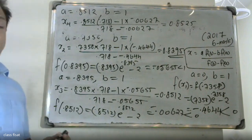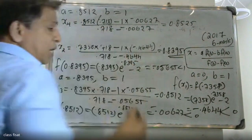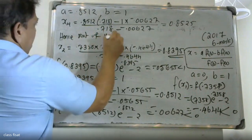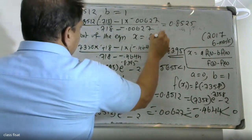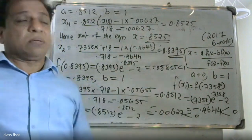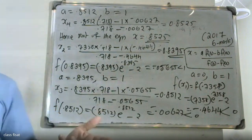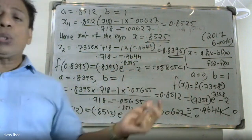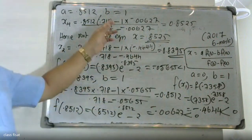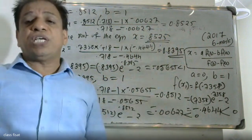We now calculate X4. Substituting A = 0.8512 and f(B) = 0.718, f(A) = -0.00627, we get X4 = 0.8512. Therefore, correct to four decimal places, the root of the equation is x = 0.8525.